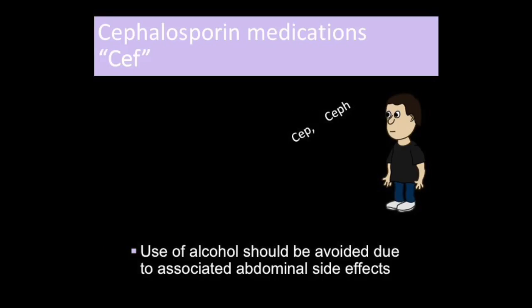Cephalosporins are like penicillin because they also destroy the cell wall, but they are more expensive. Cephalosporins can prevent and treat infections. There are four generations of these antibiotics, which are based on their activity. Use of alcohol should be avoided with cephalosporins because of associated abdominal side effects—with cephalosporins, you can't drink any Captain Morgan. Most of these antibiotics do not undergo metabolism, so they must be excreted by the kidney. Cephalosporins have the prefix 'cep' or 'ceph.'